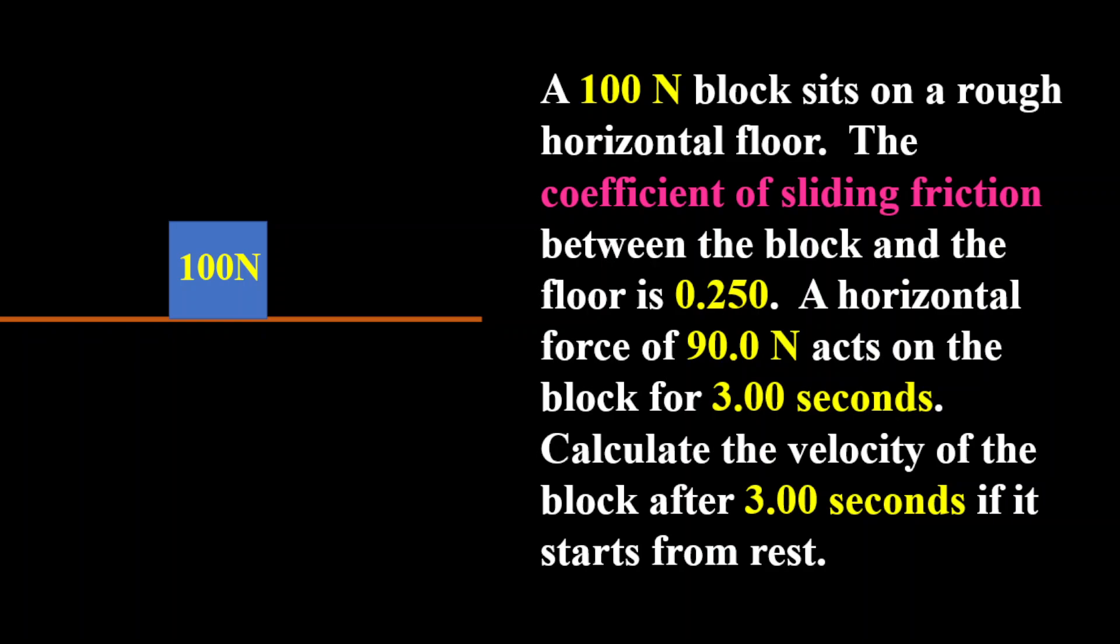Now, the block of 100 Newtons sits on the horizontal floor. Since the floor is rough, we will have a frictional force. The frictional force could go either to the right or to the left. It was not specified, so it doesn't really matter.